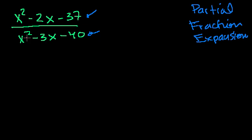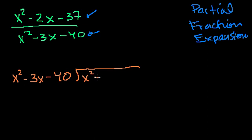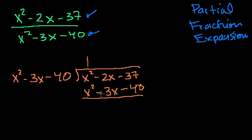So to do that, we divide the denominator into the numerator to figure out the remainder. So we divide x squared minus 3x minus 40 into x squared minus 2x minus 37. How many times do you look at the highest degree term? x squared goes into x squared one time. One times this whole thing is x squared minus 3x minus 40.